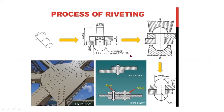When two plates are to be fastened together by a rivet, the holes in the plates are punched and reamed or drilled. Punching is the cheapest method and is used for relatively thin plates and in structural work. Drilling is used in most pressure vessel work since punching injures the material around the hole. In structural and pressure vessel riveting, the diameter of the rivet hole is usually 1.5 mm larger than the nominal diameter of the rivet.